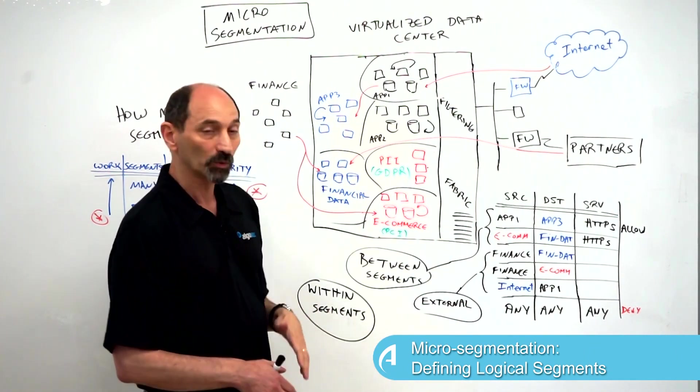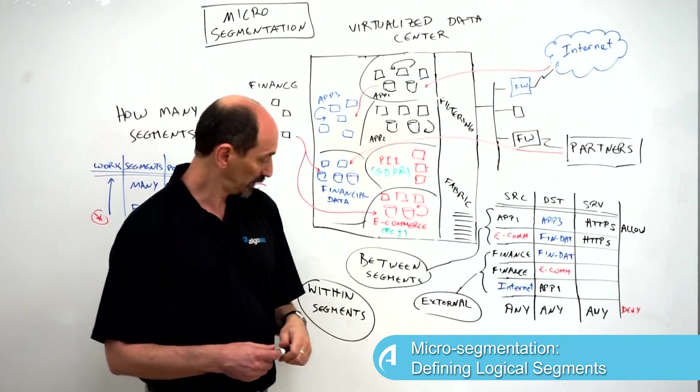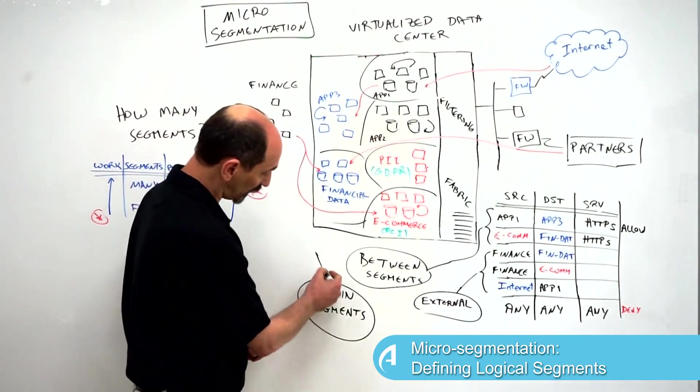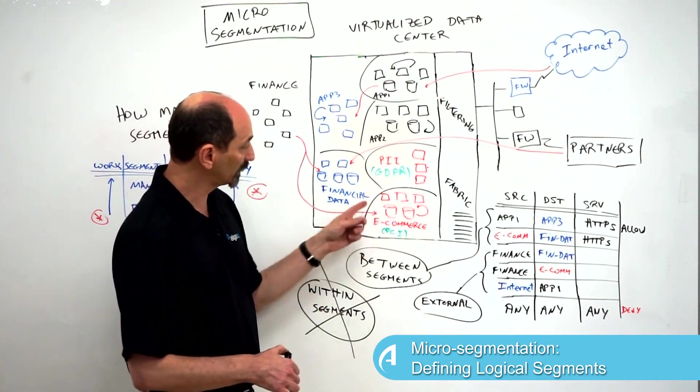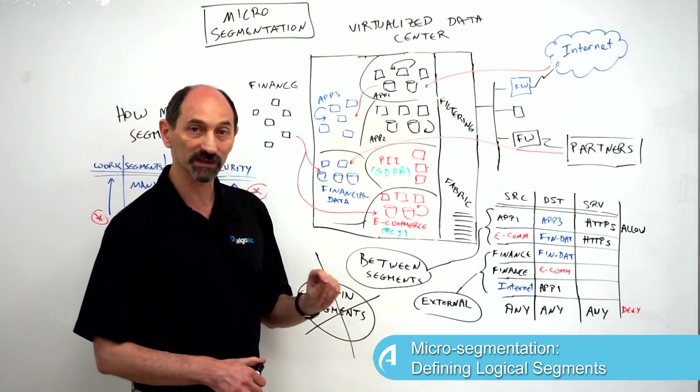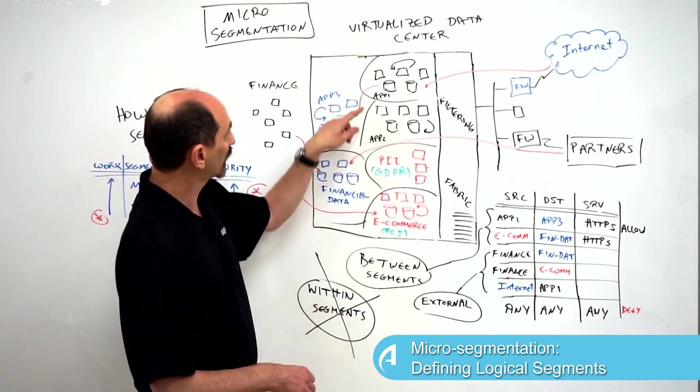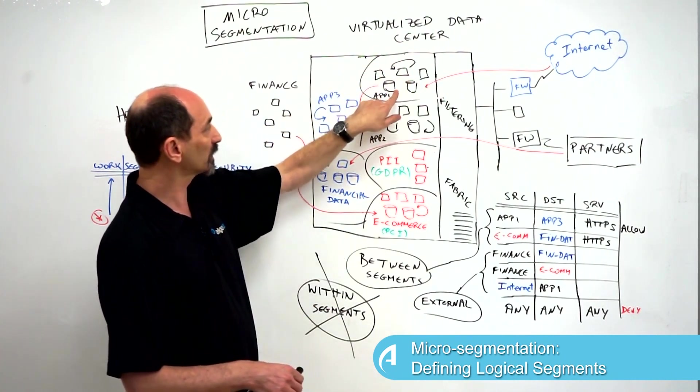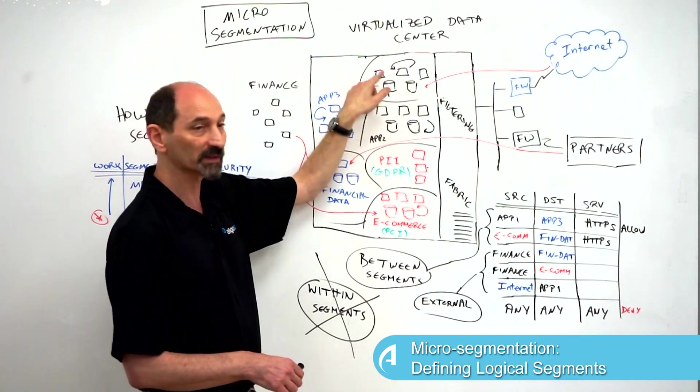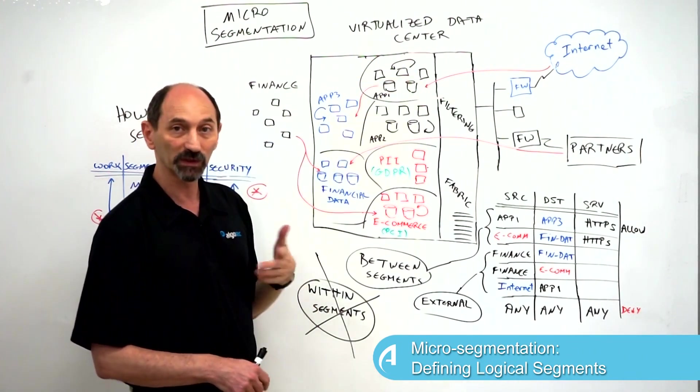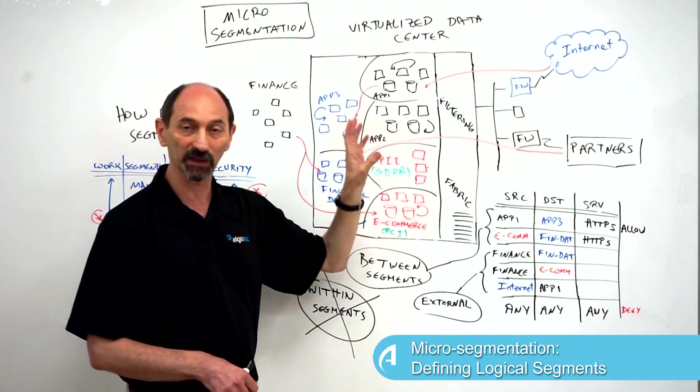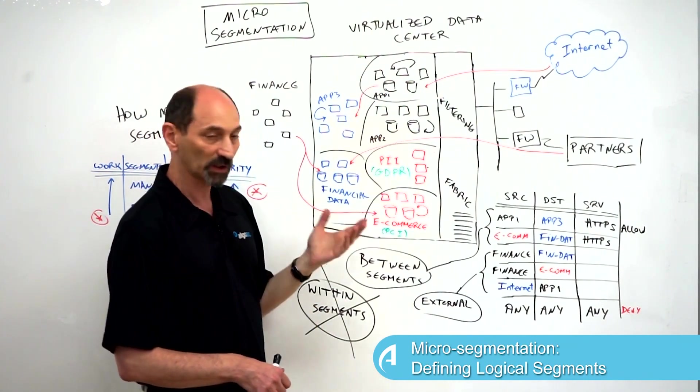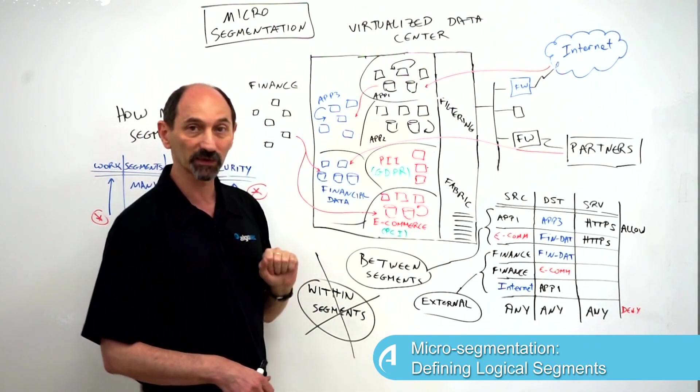Which types of rules do we not need to write? Well, we don't need to write any rules for traffic that is contained completely inside one segment. If there is any kind of traffic between servers that all support application one and they're all in the same segment, we don't need to write any rules for them because traffic that's contained inside one segment is by default allowed. It's not filtered so we don't have to write rules for that.